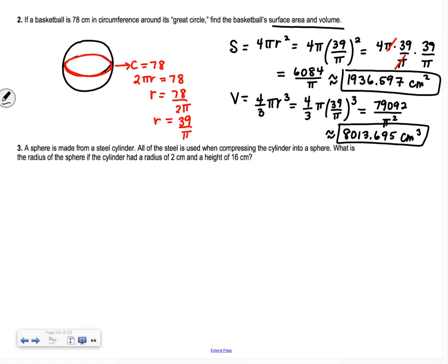Number three: a sphere is made from a steel cylinder. We took a cylinder and melted it down and transformed it into a sphere. All the steel is used when compressing the cylinder into a sphere. What is the radius of the sphere if the cylinder had a radius of 2 and height of 16?